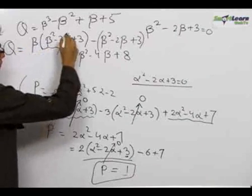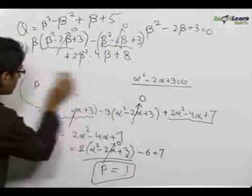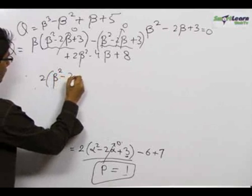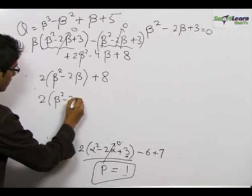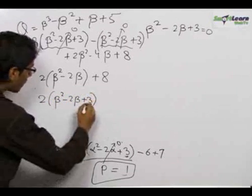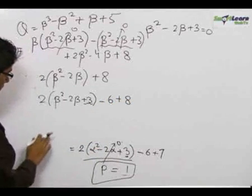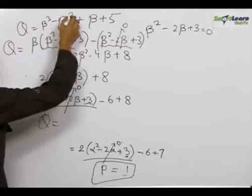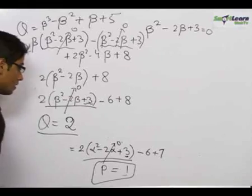We know (β² - 2β + 3) = 0, so those factors vanish, and we are left with 2β² - 4β + 8. We write this as 2(β² - 2β + 3), and since we added an extra 6, we subtract 6, giving us 2. This is again equal to 0, and q simplifies to 2. The longer term β³ - β² + β + 5 has been reduced to the simple value of 2.